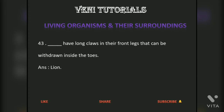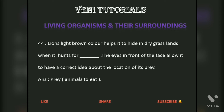Lions have long claws in their front legs that can be withdrawn inside the toes. The lion's light brown color helps it to hide in dry grasslands when it hunts for prey. The eyes in front of the face allow it to have a correct idea about the location of its prey.